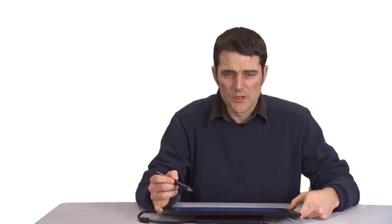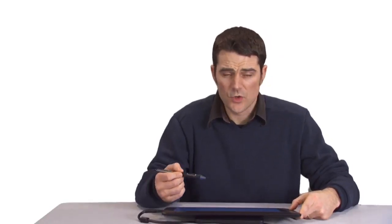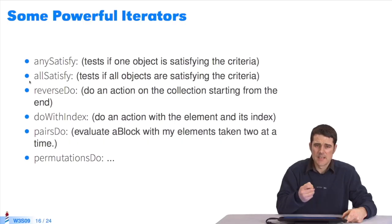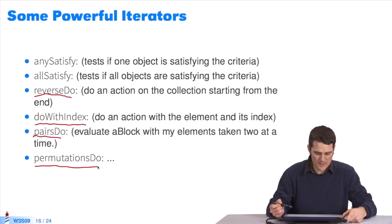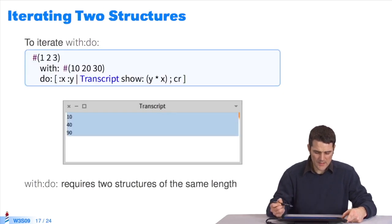There are other iterators which make a programmer's life easier. For instance, any satisfy tests if one object meets the criterion. I can test if all objects meet the criterion. I can browse the collection in reverse from the end. I can browse the collection with an index or browse its elements in pairs. I can browse all the possible circular permutations, etc. There are many iterators. You can build new ones, too.